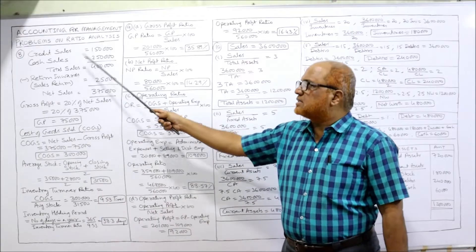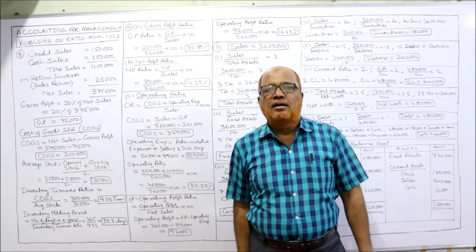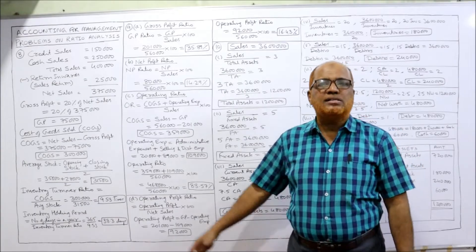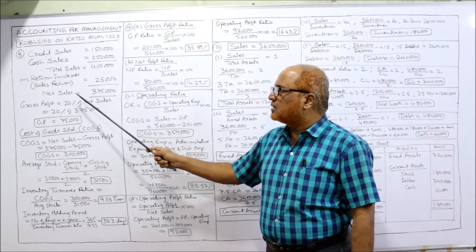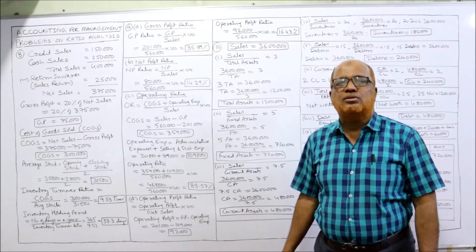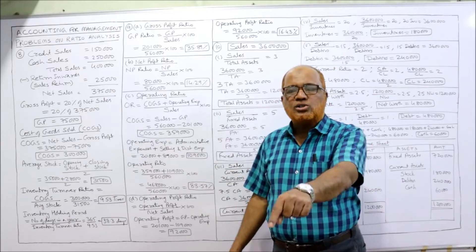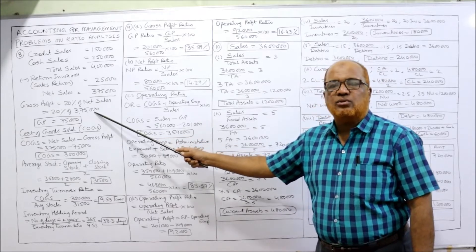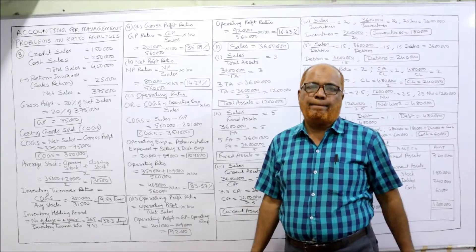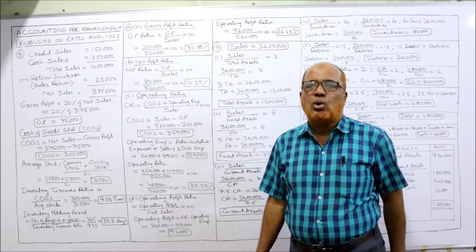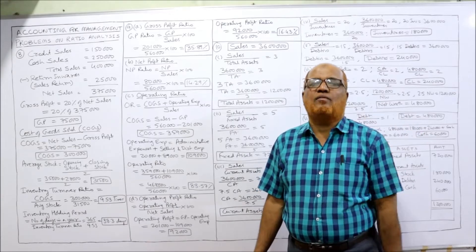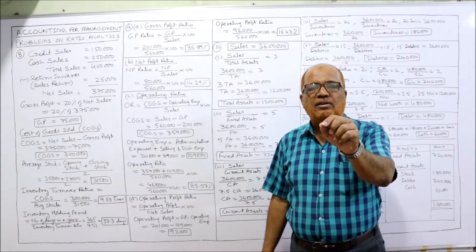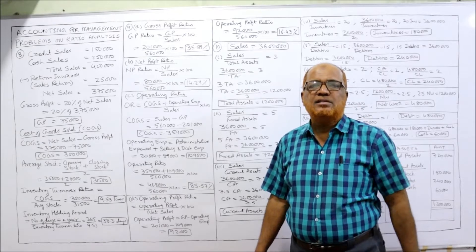Credit sales are 1,50,000 and cash sales are 2,50,000. Add both to get total sales of 4,00,000. Deduct return inward of 25,000 to get net sales of 3,75,000. Gross profit ratio is 20% on net sales, so 20% of 3,75,000 equals 75,000 gross profit. Cost of goods sold is sales minus gross profit: 3,75,000 minus 75,000 equals 3,00,000.